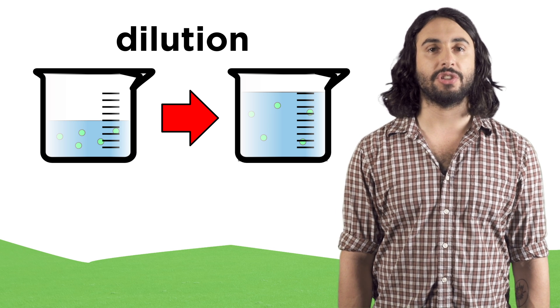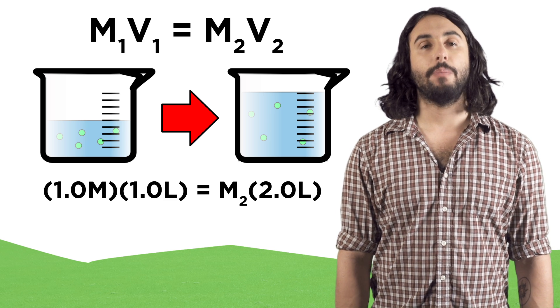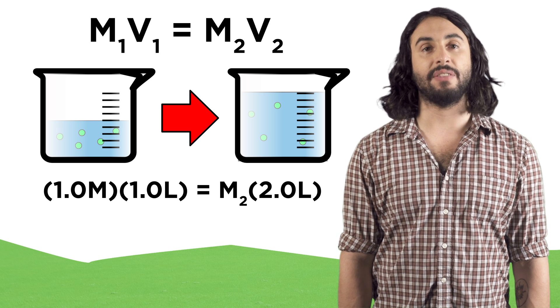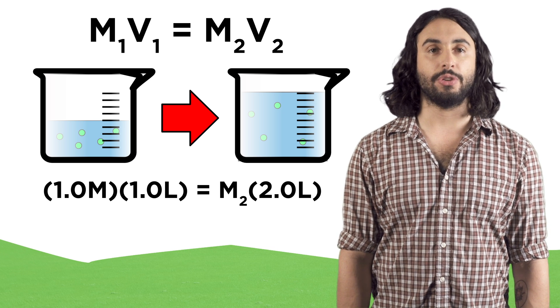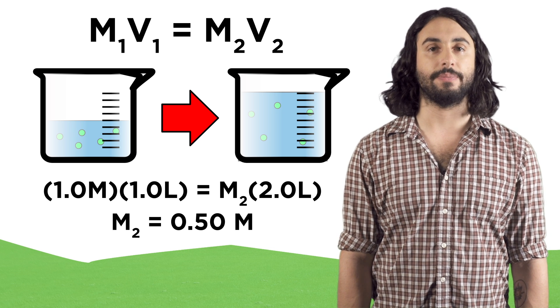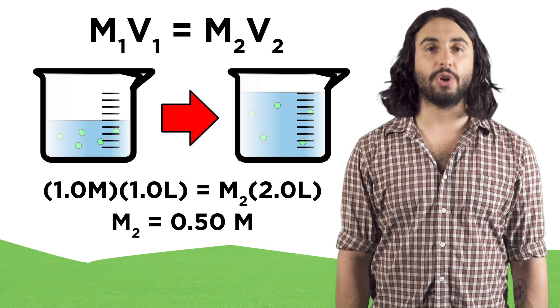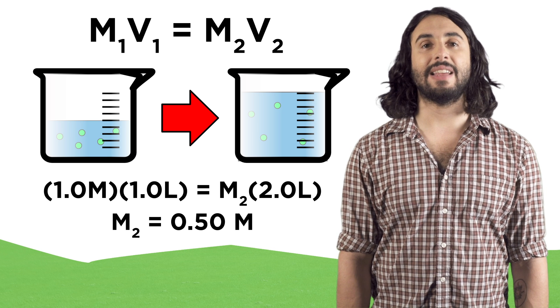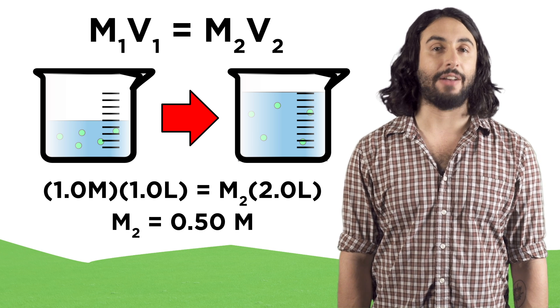We make dilution calculations using this equation. Plug in the initial concentration and volume, then the final volume you will dilute to, and then solve for the new concentration. The quantities are inversely related, so we can see that doubling the volume will cut the concentration in half.